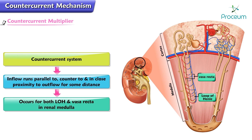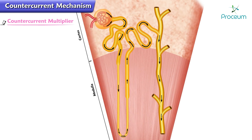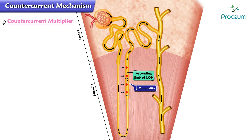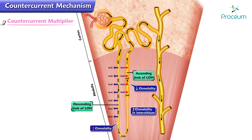This occurs for both the loops of Henle and the vasa recta in the renal medulla. By this process, solutes — principally sodium chloride — are reabsorbed without water from the ascending limb of the loop of Henle into the surrounding medullary interstitium. This decreases the osmolality in the tubular fluid and raises the osmolality of the interstitium. The increased osmolality of the interstitium then causes water to be reabsorbed from the descending limb of the loop of Henle, thus increasing the tubular fluid osmolality in that segment.